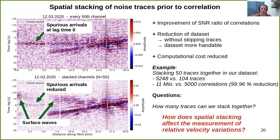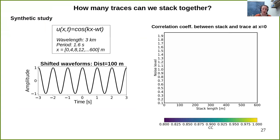To investigate this in depth, we carried out a synthetic study. To simulate our real data setting, we created a set of harmonic waves with wavelengths of 3 kilometers and a period of 1.6 seconds. The first trace is placed at x=0 meters, and then all traces are shifted in space by a distance of 4 meters, obtaining the time shifts measured in the real data. The lower figure on the left shows all shifted waveforms up to a distance of 100 meters, meaning 25 adjacent traces are displayed. In the right figure, I will show how the correlation coefficient between the trace at 0 meters and the stacked traces evolves for increasing stack length, with the x-axis showing stack length in meters and y-axis showing noise level dependency.